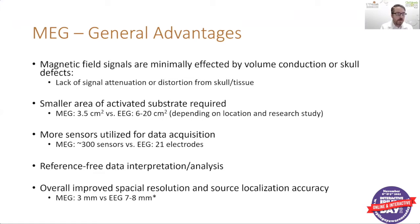Magnetic fields in general are considered minimally affected by the skull, so we're able to detect those magnetic fields well with little signal attenuation or distortion. MEG is also able to detect a slightly smaller amount of substrate — the MEG only needs 3.5 square centimeters of abnormal electrical signal to be detected, whereas an EEG needs more in the realm of 6 to 20 square centimeters, depending on the location and research study.